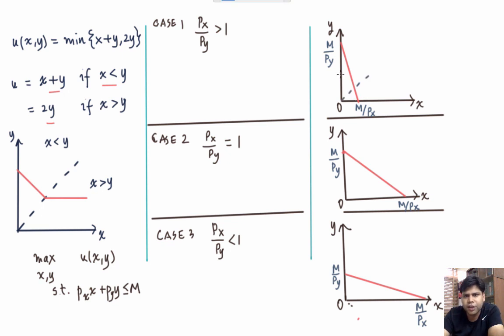Clearly when we are going to do this exercise for a few ICs, in a similar way that we have discussed, we will find that the highest possible IC is going to pass through this point where the individual consumes only y.